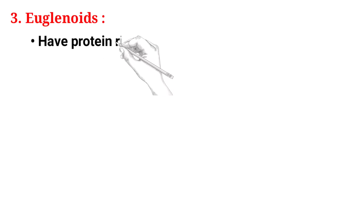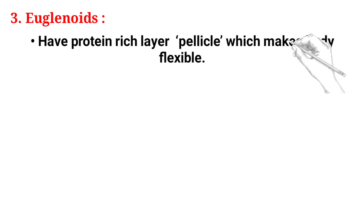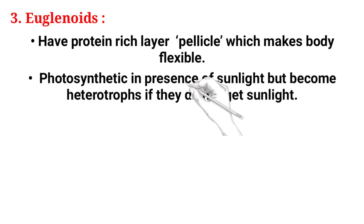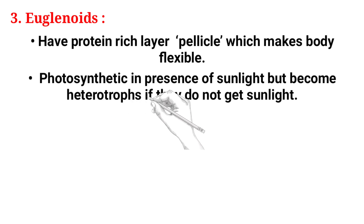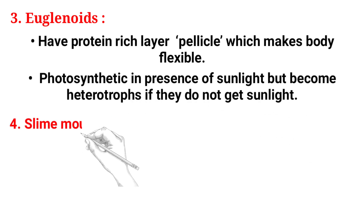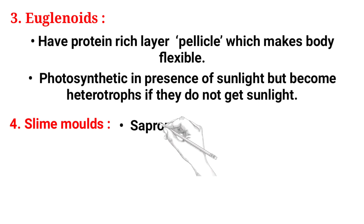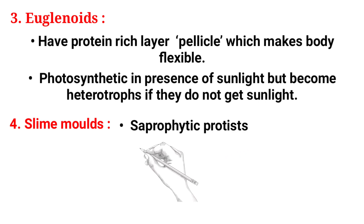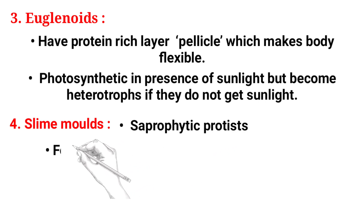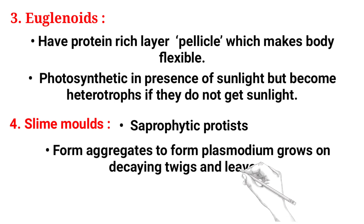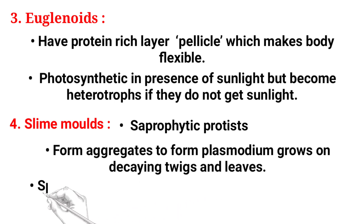Third, euglenoids have a protein-rich layer called the pellicle, which makes the body flexible. They are photosynthetic in the presence of sunlight but become heterotrophic if they do not get sunlight. Slime molds are saprophytic protists that form aggregations to create a plasmodium and grow on decaying twigs and leaves.